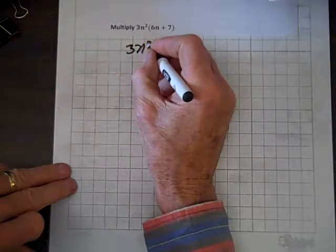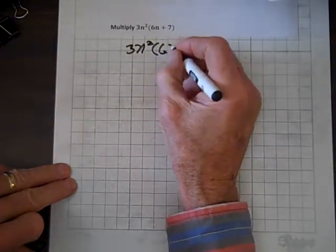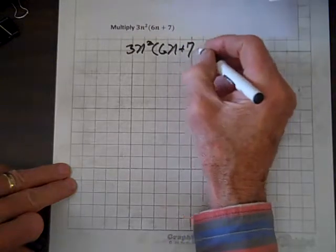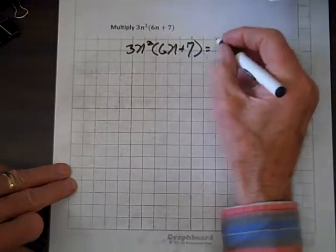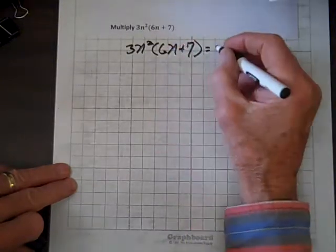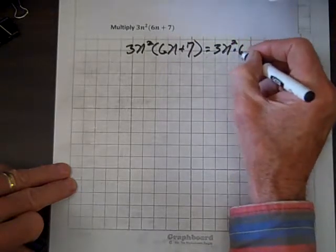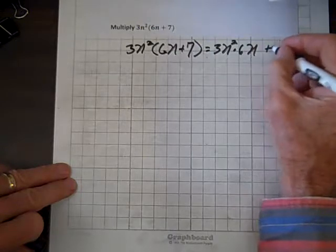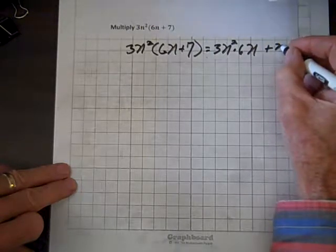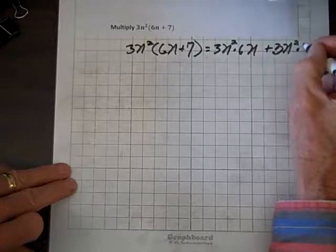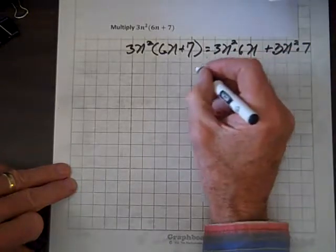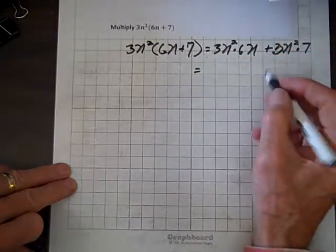This is 3n squared times 6n plus 7, and that equals 3n squared times 6n plus 3n squared times 7. When you distribute that 3n squared,